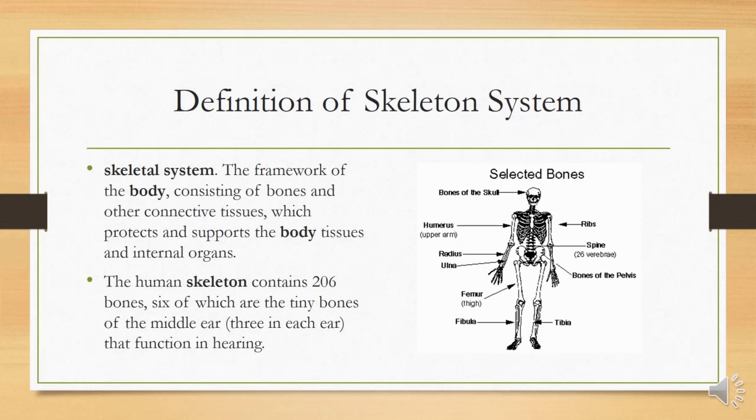So the skeleton system is to support and protect the body and to protect the organs which are soft and sensitive, like the nervous system. Now nerves are protected by the bones.